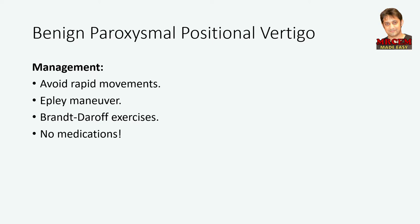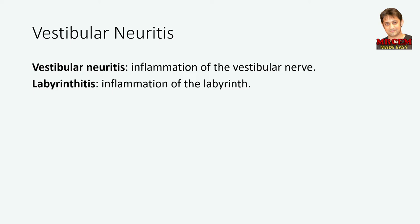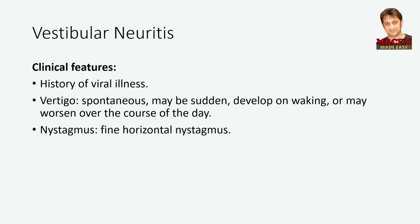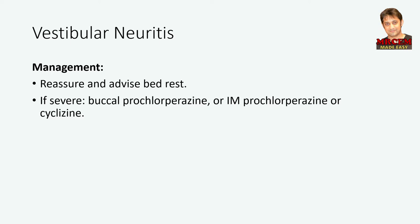Let's move to vestibular neuritis. Vestibular neuritis and labyrinthitis have been used interchangeably in the past, but vestibular neuritis is thought to be due to inflammation of the vestibular nerve, while labyrinthitis involves inflammation of the labyrinth. Hearing loss is a feature of labyrinthitis, but hearing is not affected in vestibular neuritis. Most cases follow a recent viral illness. The vertigo of vestibular neuritis occurs spontaneously, may be sudden, develop on waking, or worsen over the course of the day. It is exacerbated by changes of head position but is initially constant even when the head is still. Nystagmus is present and is usually fine horizontal nystagmus. For management, reassure the patient and advise bed rest. If symptoms are severe, consider giving buccal prochlorperazine, or an intramuscular injection of prochlorperazine or cyclizine.